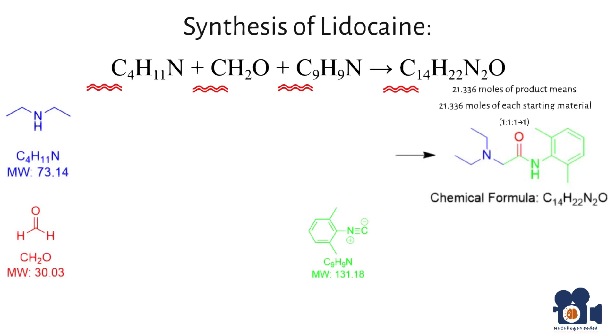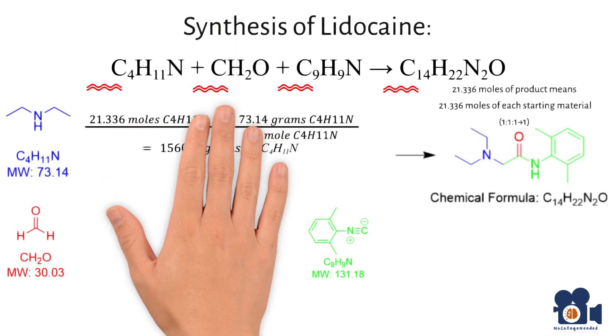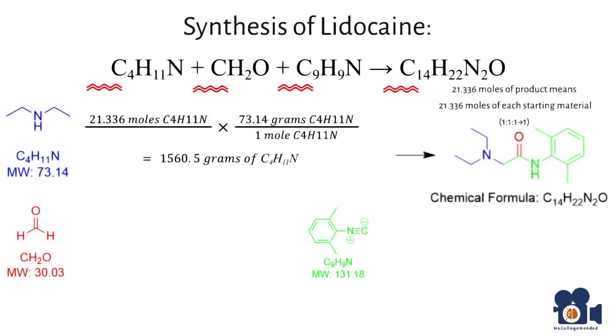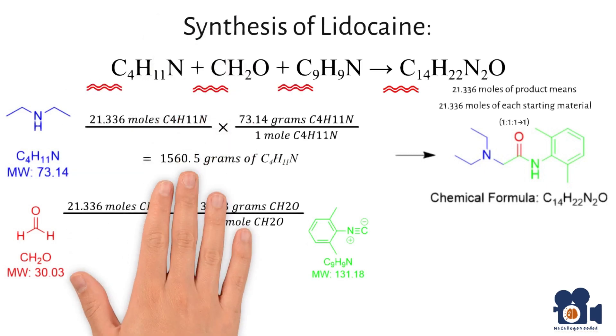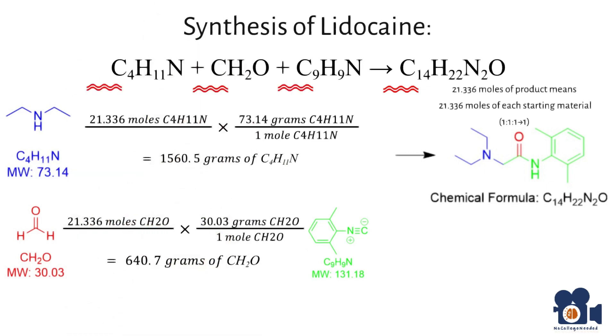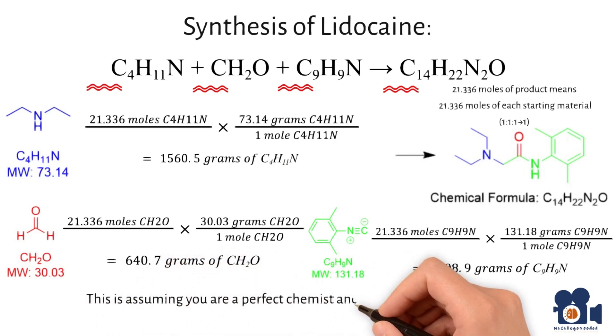Once you have the molecular weight, determining the grams is just multiplying the moles by the molecular weights as such. To get 1560.5 grams of C4H11N, 640.7 grams of CH2O, and 2798.9 grams of C9H9N.